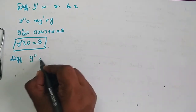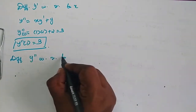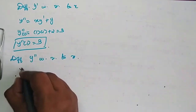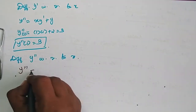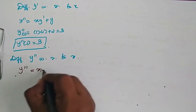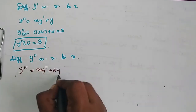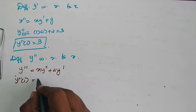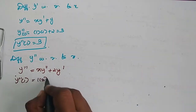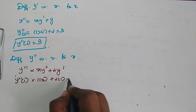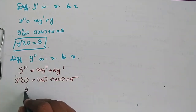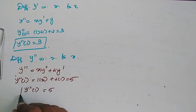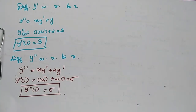Differentiate y'' with respect to x. So y''' is equal to x·y'' plus 2y'. Therefore y'''(1) equals 1 into 3 plus 2 into 1, which is equal to 5. So y'''(1) is equal to 5.